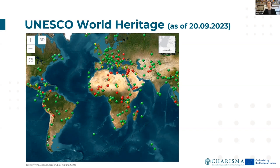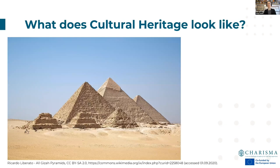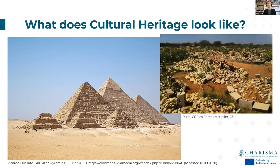We can ask the question: what exactly does cultural heritage look like? Let's start with the pyramids of Egypt. As a Central European myself, I've grown up with stories about ancient Egypt — the pyramids are cultural heritage and are worth protecting. But consider another picture showing stones also in Africa. At first glance, it's not clear if this is something that needs protecting or just stone heaps along the roadside. It's actually a cemetery in Somalia — a cemetery that's very important to the people who live with it, who own it, who bury their dead there.